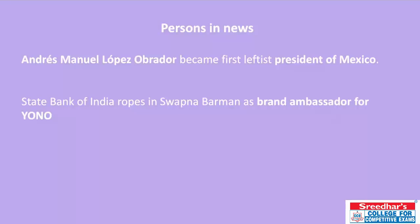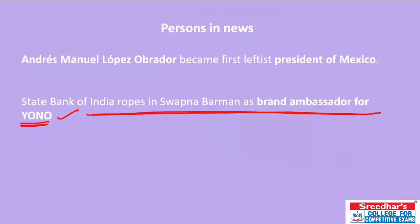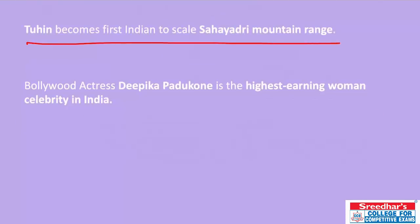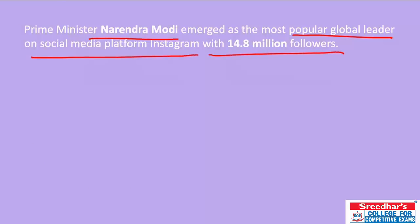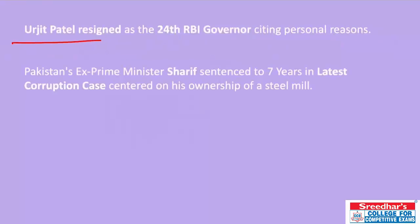In persons in news: State Bank of India has roped in Swapna Barman as brand ambassador of YONO. Someone has become the first Indian to scale the Sahyadri mountain range. Bollywood actress Deepika Padukone is the highest-earning women celebrity in India. PM Narendra Modi has emerged as the most popular global leader on Instagram with 14.8 million followers. Urjit Patel has resigned as the 24th RBI Governor citing personal reasons.